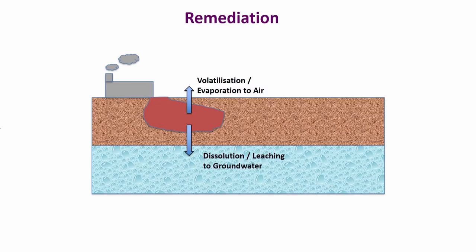Consider this schematic example of a soil system. We have a small zone of contamination, and from this there is a possibility of evaporation of the chemical through the soil to air, and also a possibility of leaching to the groundwater by dissolution. We are looking at this scenario occurring in the perimeter of a factory or some processing facility where it is all open ground.